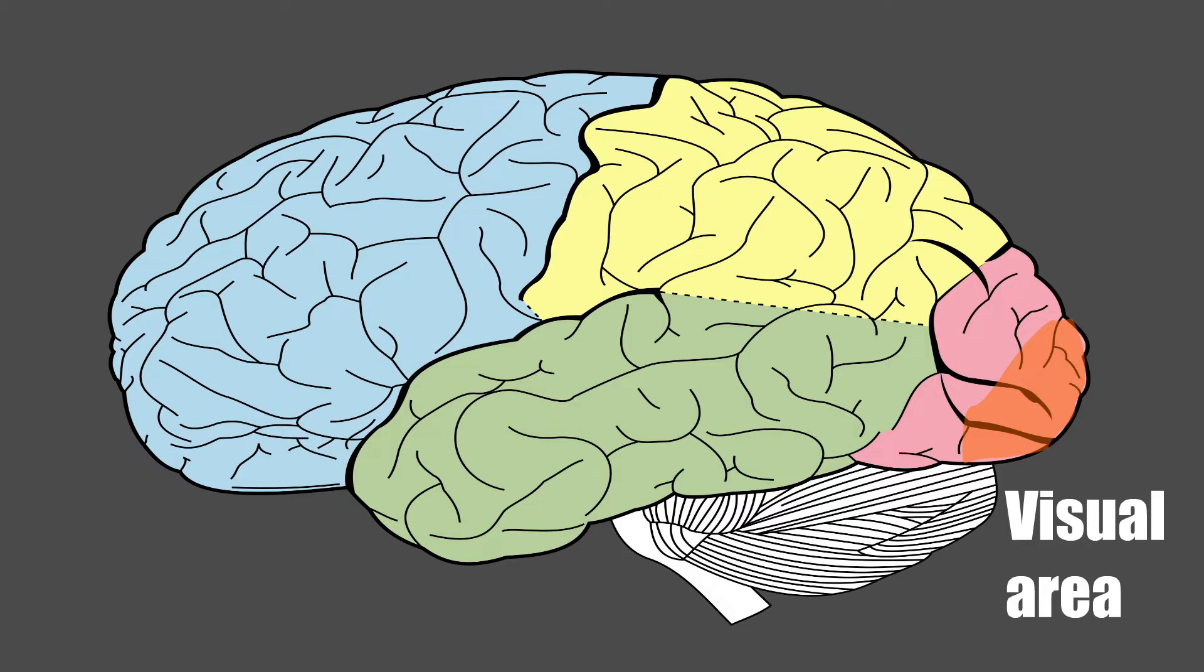The visual area is situated on the posterior pole and the medial aspect of the cerebral hemisphere in the region of the calcarine sulcus.